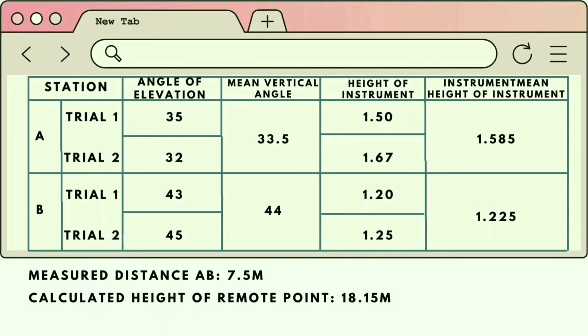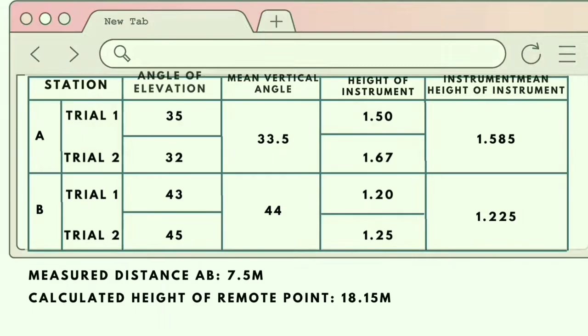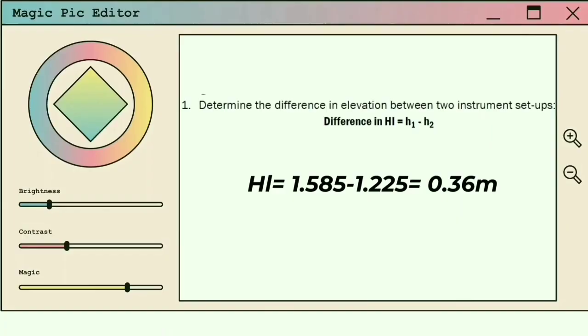For the mean height of instrument, add the two trials for height of instrument in each station then divide by 2. For Station A: 1.5 plus 1.67 divided by 2 equals 1.585. Station B: 1.20 plus 1.25 divided by 2 equals 1.225.